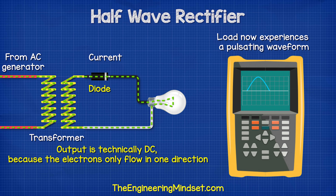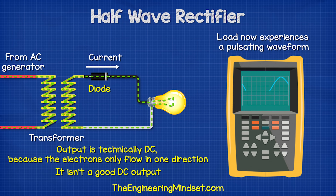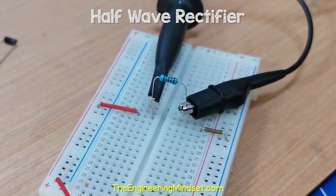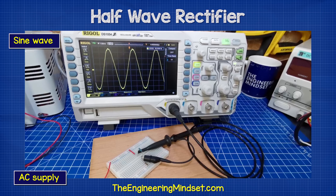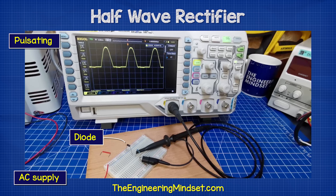It's just not a very good DC output, as it's not completely flat. Here I have a resistor which is connected to a low-voltage AC supply. We see on the oscilloscope the AC sine wave. When I connect a diode in series with this, the oscilloscope shows a pulsating pattern in the positive region.